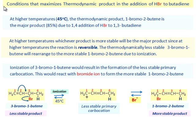Conditions that maximize thermodynamic product in the addition of HBr to 1,3-butadiene. At higher temperatures, the thermodynamic product 1-bromo-2-butene is the major product due to 1,4-addition of HBr to 1,3-butadiene. At higher temperatures, whichever product is more stable will be the major product since at these temperatures the reaction is reversible. The thermodynamically less stable 3-bromo-1-butene will rearrange to the more stable 1-bromo-2-butene due to ionization.